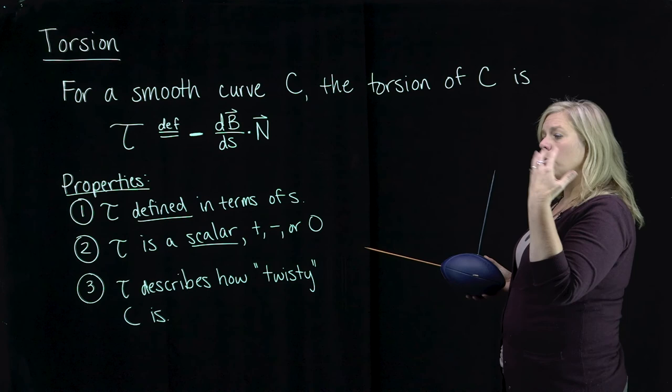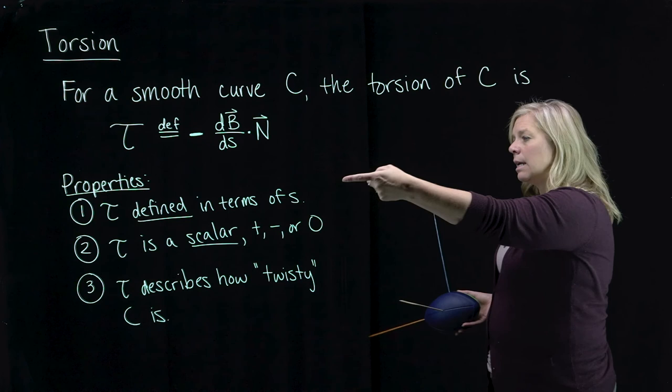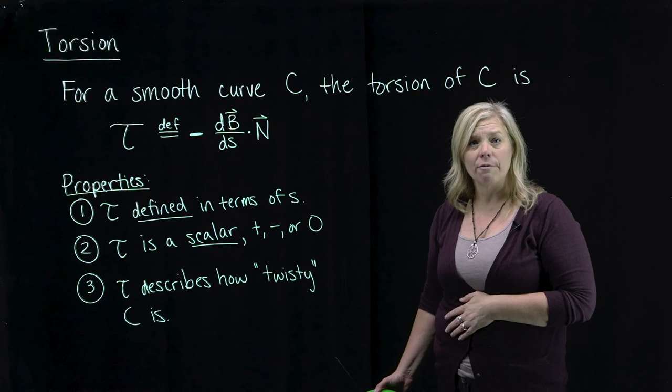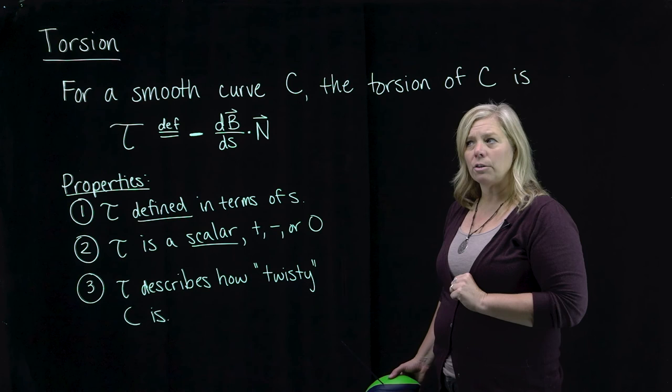One more thing to notice here: since torsion is defined in terms of s, you would really rather not have to go through s to calculate it. You would prefer an alternate formula for calculating torsion. So in another video we'll talk about an alternate formula used to calculate torsion and do an example of actually calculating it for a curve.